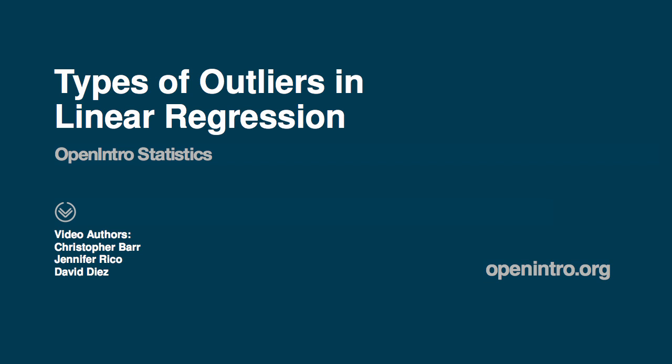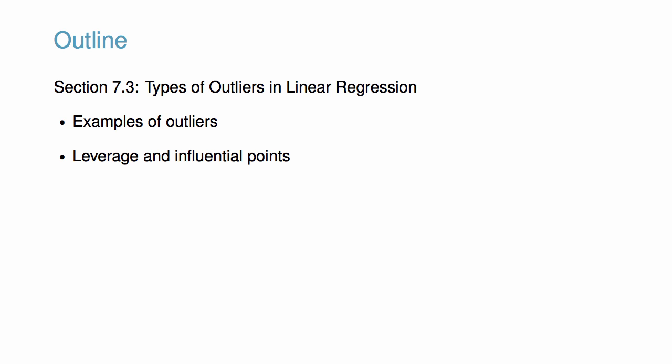An important task in evaluating a regression model is to determine which outliers are important and influential. This video helps with this challenge by accompanying OpenIntro Statistics discussion of types of outliers in linear regression. To start, we will see a few examples of outliers, and then we'll learn about leverage and influential points.